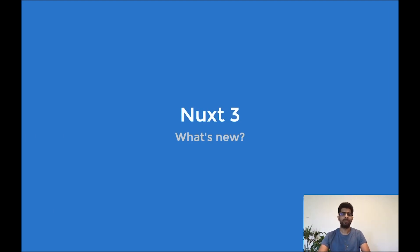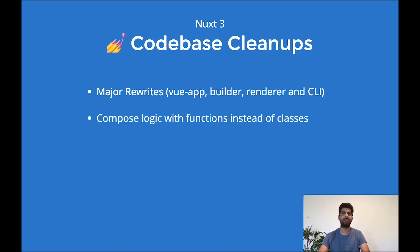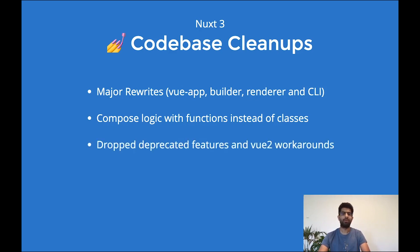With Nuxt 3 we created a fresh repository which allowed us to rethink most of the solutions we implemented in Nuxt 2 and opened room for new possibilities and ideas. We started by doing major rewrites to the essential parts including view app, template builder, render modules, and common interface. We are moving away from using giant classes to split logic using functions, making source code more readable and consistent with the rest of the Vue ecosystem. We dropped deprecated features from Nuxt 2 and any workarounds required for Vue 2. The repository structure is now much more simplified, so new contributors can quickly jump into the source code, understand it, and start contributing right away.